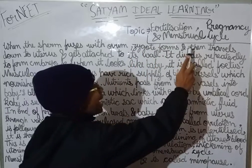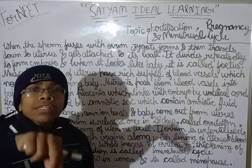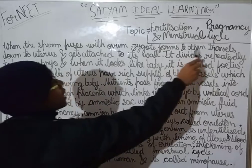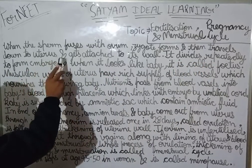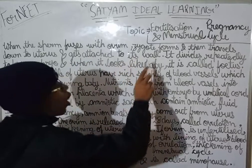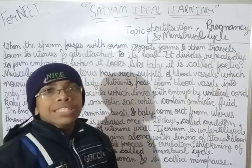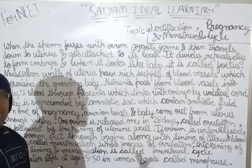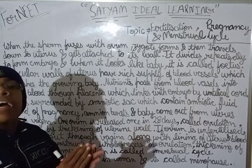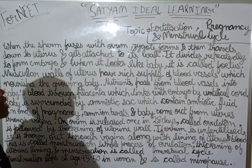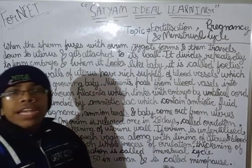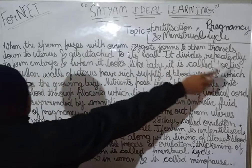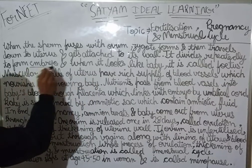The zygote then travels back down to the uterus and gets attached to its wall. The uterus is a hollow muscular organ. The zygote comes to the uterus and attaches to the wall of the uterus.